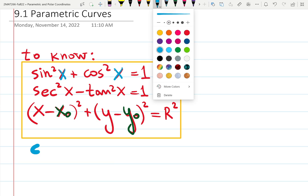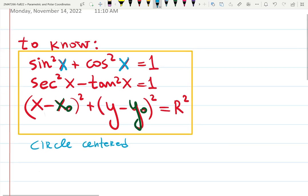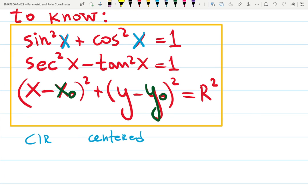Circle centered at what? X sub 0, y. Exactly, thank you. Circle centered at - sometimes we call it x naught y naught, or x sub 0 y sub 0.